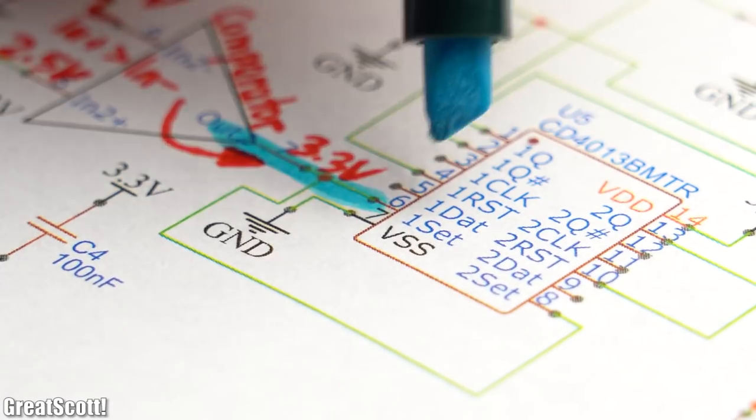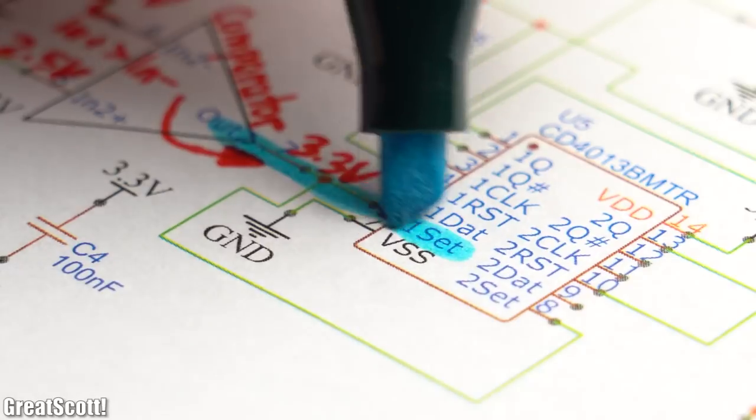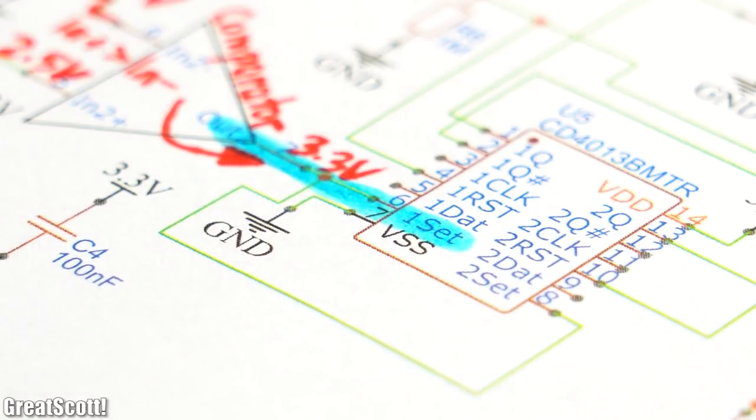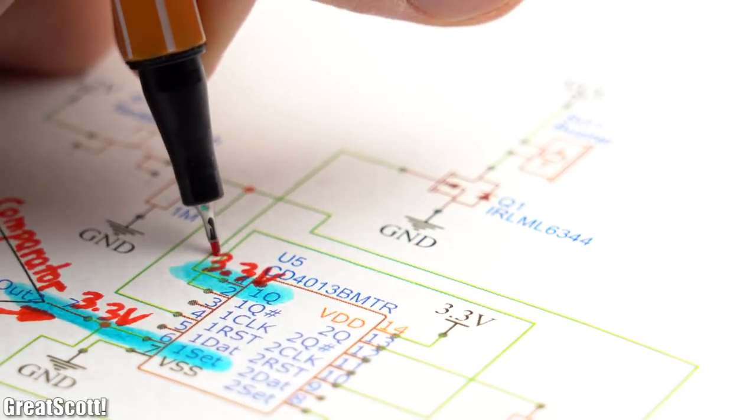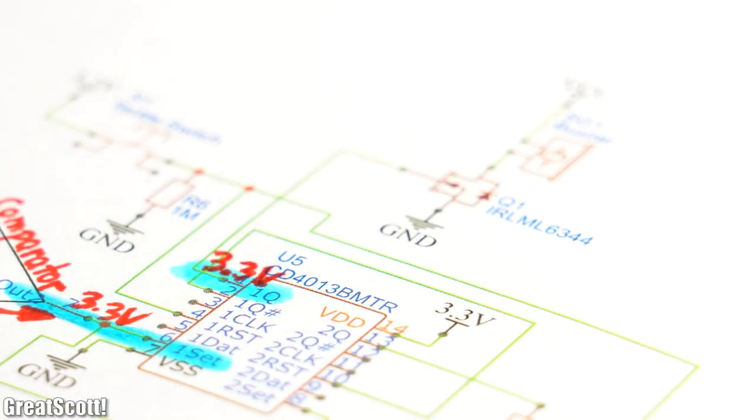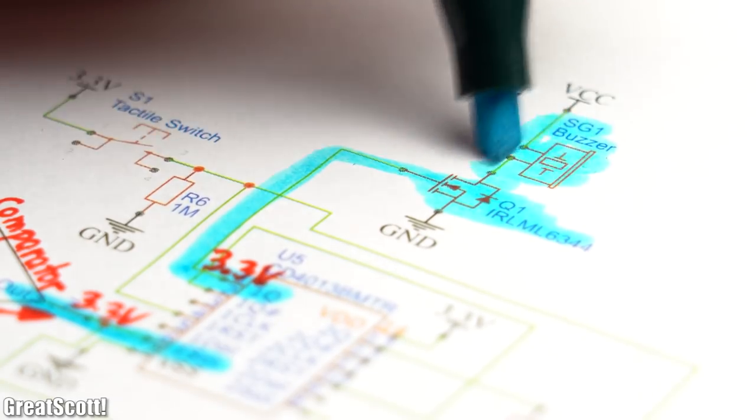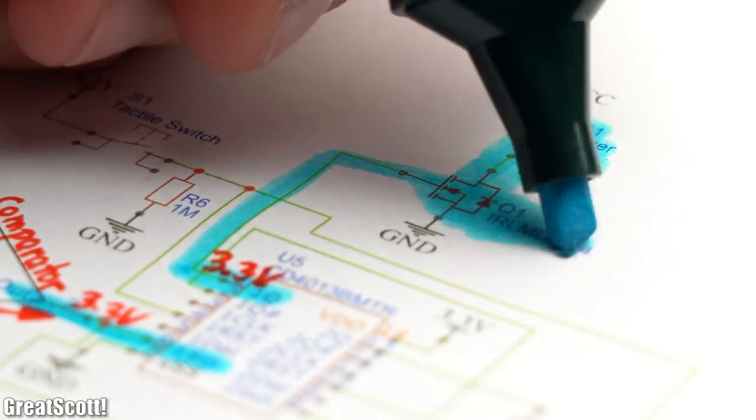Now the output of the comparator connects to the set pin of the D-type flip-flop, which if it gets pulled to 3.3V activates its output Q, which turns on the logic level MOSFET and thus the buzzer.